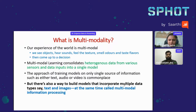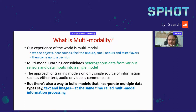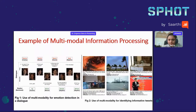Let me start with an introduction to multimodality. Our experience of the world is multimodal — whenever we have to make a decision about a particular object, we taste it, see it, hear sounds, feel texture, smell odors, and taste flavors. We collect information from multiple sensors and then take a decision. Multimodal learning consolidates heterogeneous data from various sensors and data inputs into a single model.